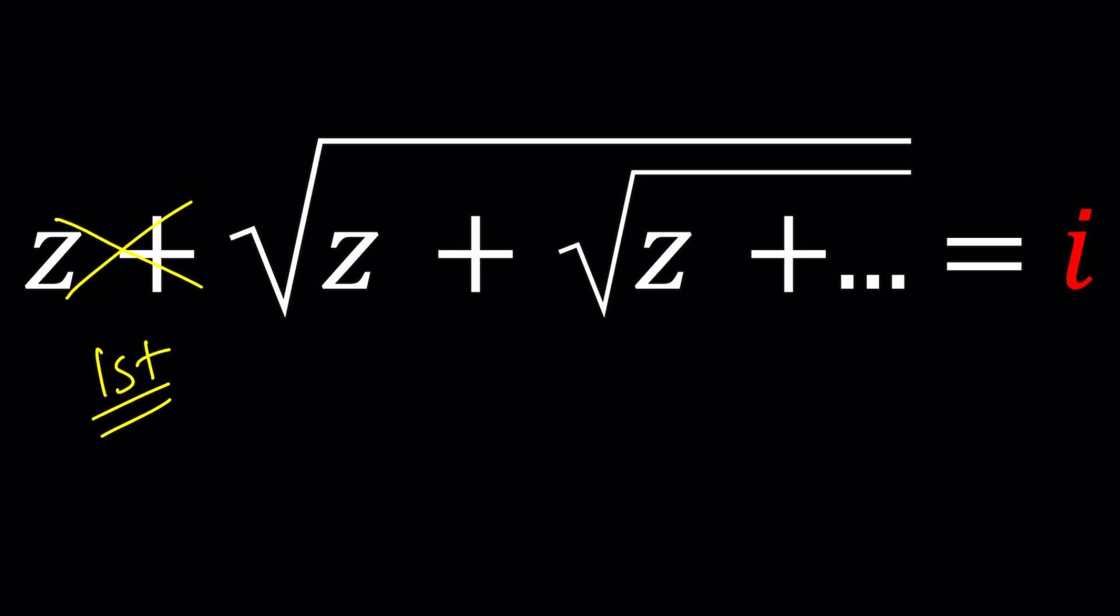So hopefully I could just take care of this nested radical real quick, right? But that additional Z kind of messes things up a little bit, doesn't it? But don't worry, we're going to fix it.